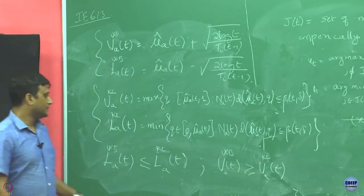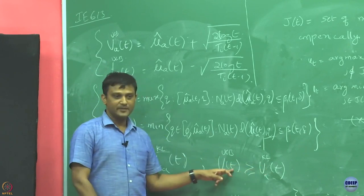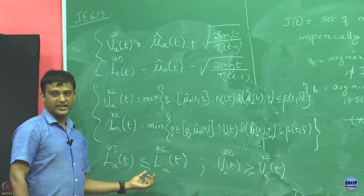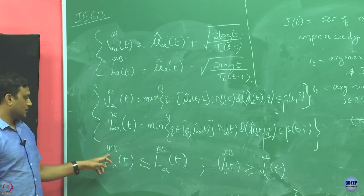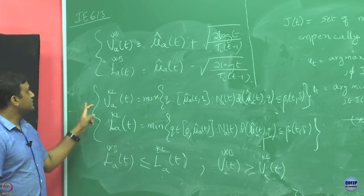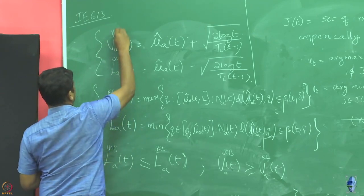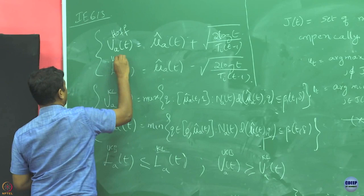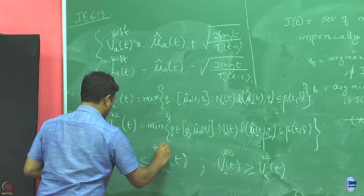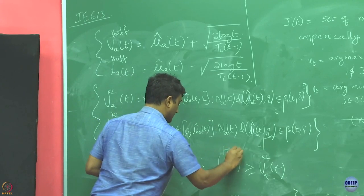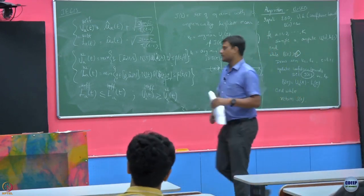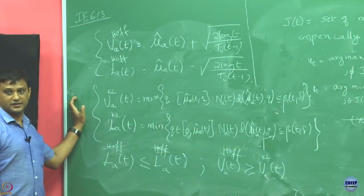What we are saying is the upper confidence term we get from KL-UCB is dominated by that we could have obtained from the UCB, that means this is the tighter one. Also on the lower confidence bound we are saying that the lower confidence bound we get from the UCB method, or maybe instead of UCB I just call Hoefding's.